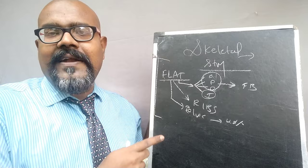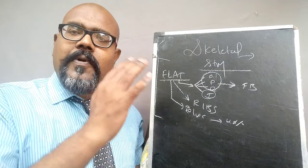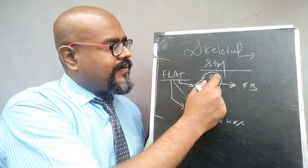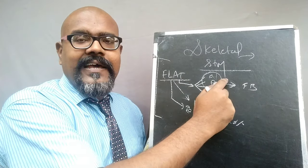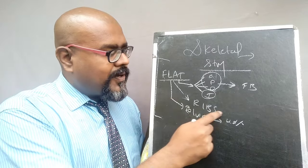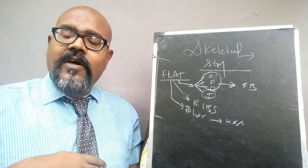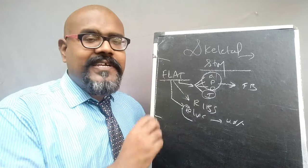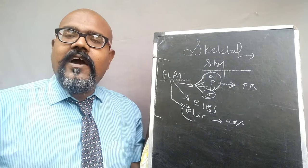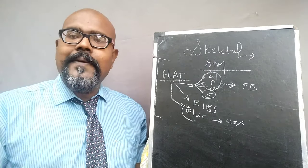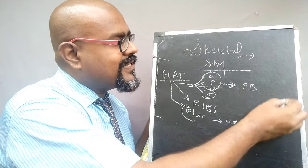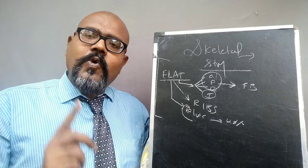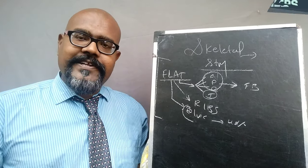The main function of flat bones is to give extra protection to the internal organs. The flat bones in the cranial region protect the brain. The ribs protect internal organs — the heart and the lungs. The pelvic region flat bones protect the excretory, digestive, and reproductive organs.